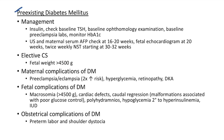For pre-existing diabetes mellitus complicating pregnancy: give insulin, check baseline TSH, baseline ophthalmology examination, and baseline preeclampsia labs. Monitor HbA1c, ultrasound, and maternal serum AFP at 16 to 20 weeks. Fetal echocardiogram should be done at 20 weeks. Twice-weekly non-stress test should be done starting at 30 to 32 weeks. Elective cesarean section is indicated if fetal weight is greater than 4500 grams.